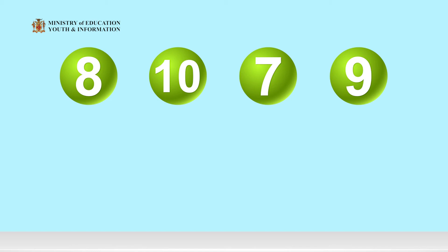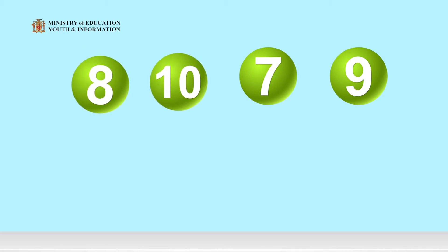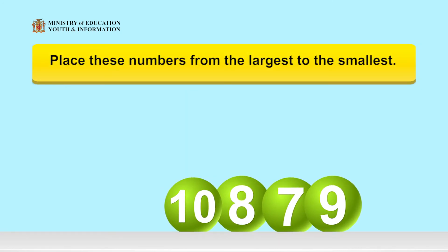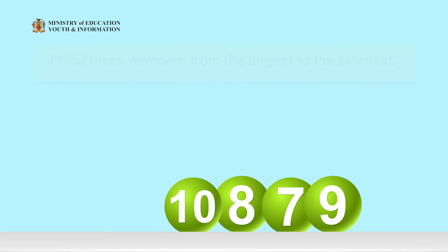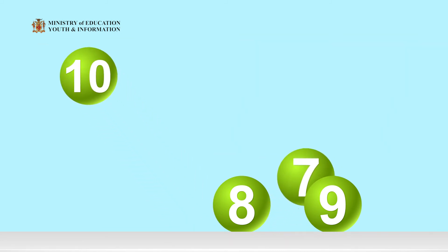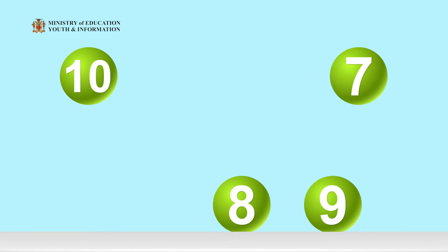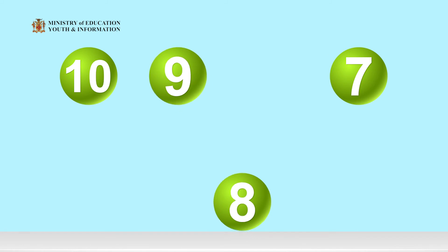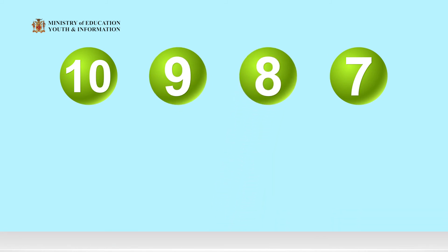Here's our final activity for today. Joanna is playing a game. She needs your help in placing the numbers 8, 10, 7, 9 in order from the largest number to the smallest number. Think about the number that Joanna should place first. Now, give me all four numbers in the correct order from the largest to the smallest. Awesome! They are 10, 9, 8, 7.